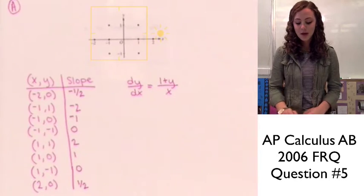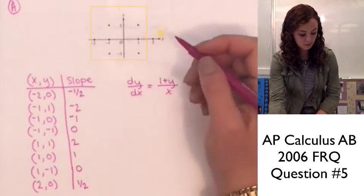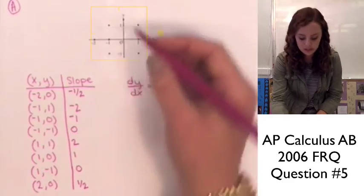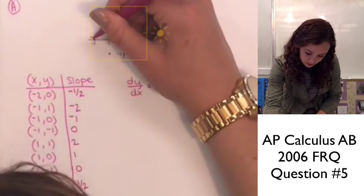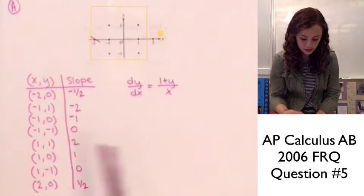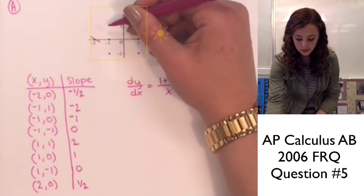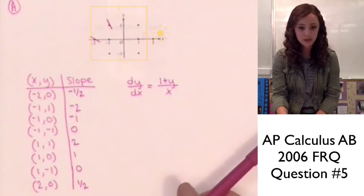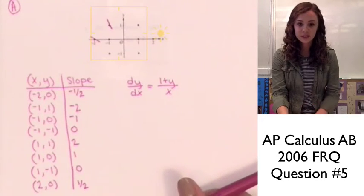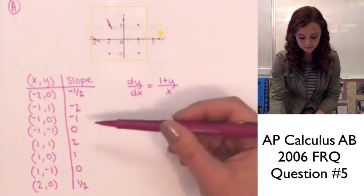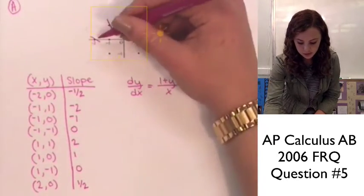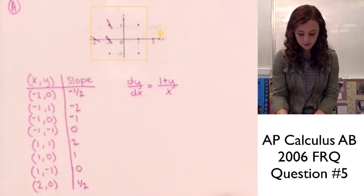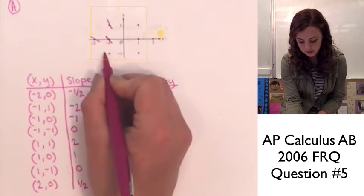Now that we have all our slopes figured out, we can go ahead and plot them on the given axis. For this point, the slope is -1/2, so it's not going to be very steep at all and it's going to be in the negative direction. For the point (-1, 1), the slope is -2, so that's a pretty steep slope — we'll exaggerate it because they will be looking at relative steepness and the correct direction.